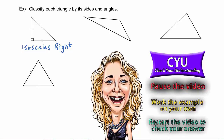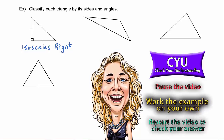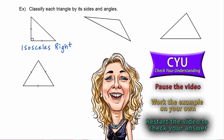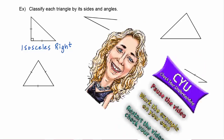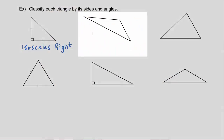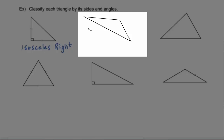It's CYU time, so pause the video, work the example on your own, then restart the video to check your answer. Okay, let's see how you did. This next triangle — none of the sides are equal, so we know it will be scalene. Looking at the angles, while two angles are acute, we can see that this angle here is obtuse. So we'll use the word obtuse to describe the angles, and this is a scalene obtuse triangle.